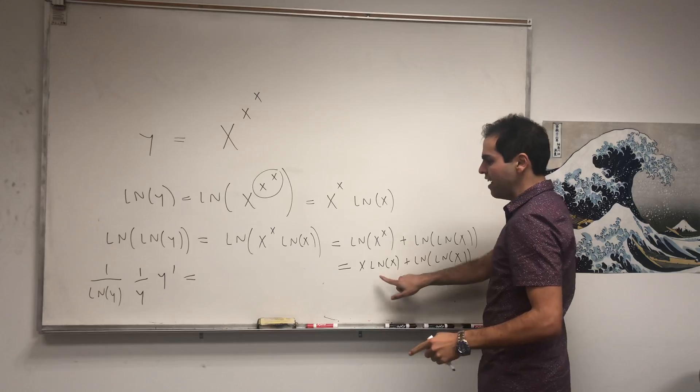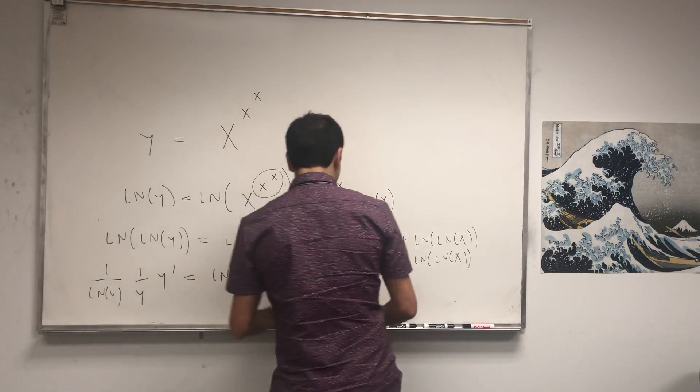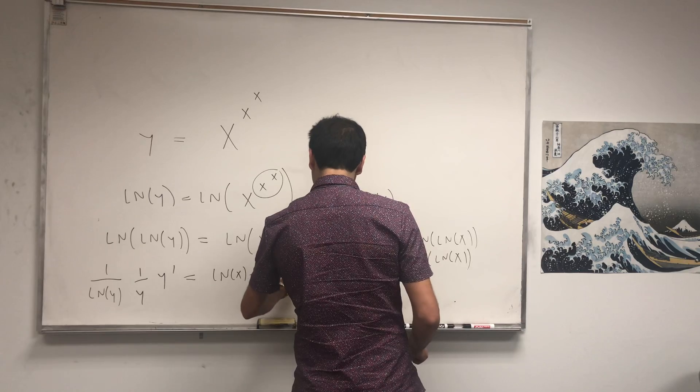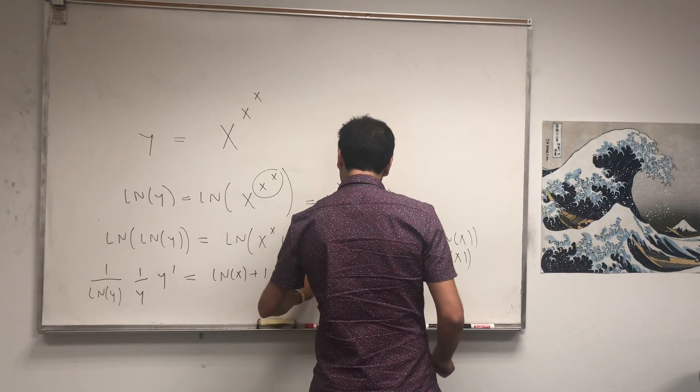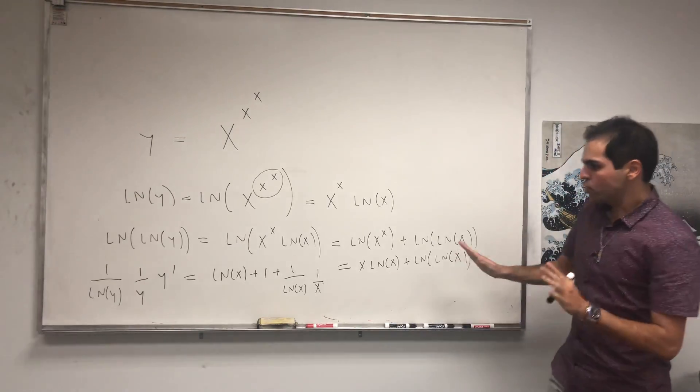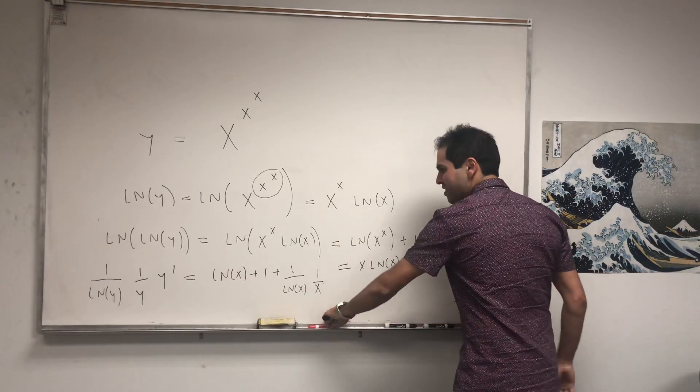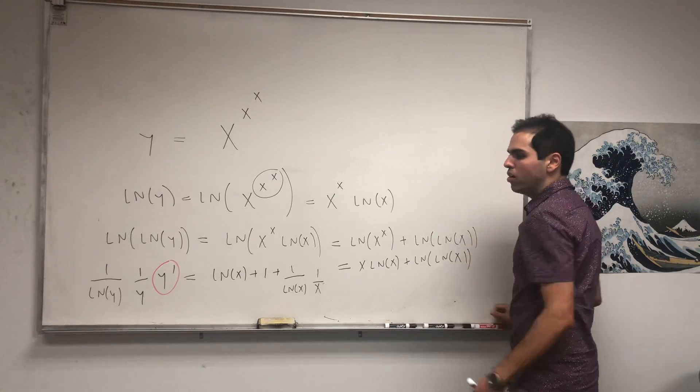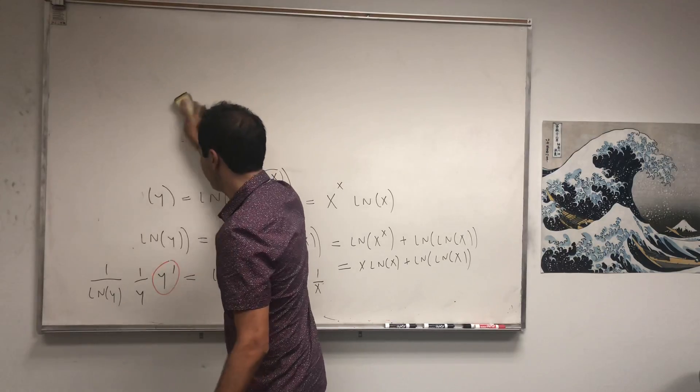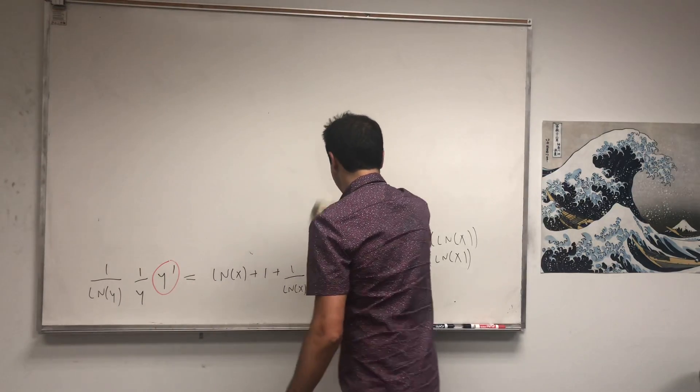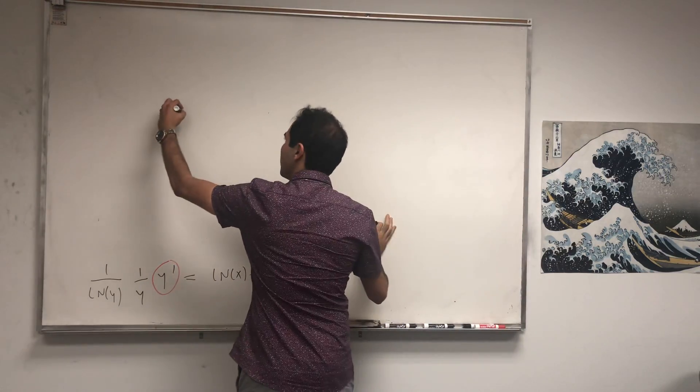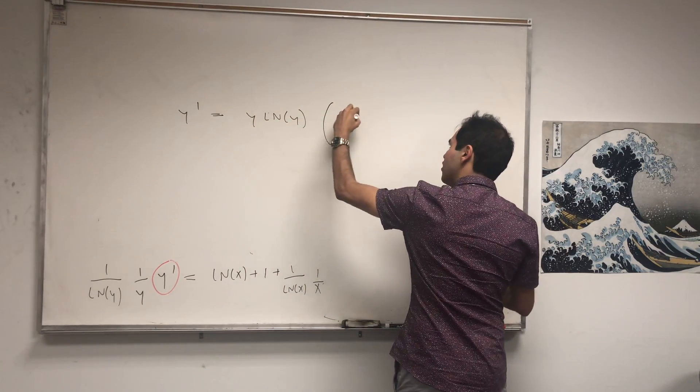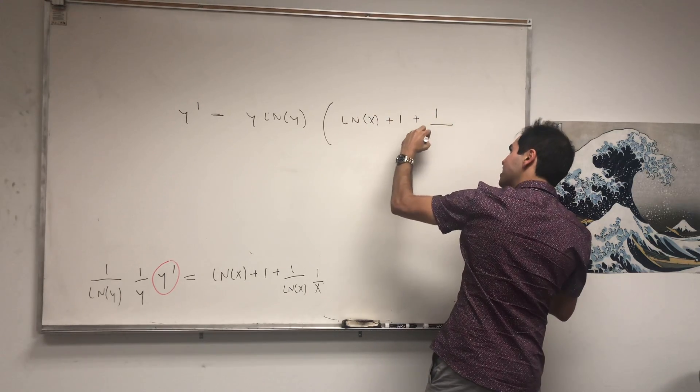which becomes ln of x plus x times 1 over x, which becomes 1, plus 1 over ln of x, times 1 over x. All right, so that's good. So we have this identity that involves derivatives. And now, remember what we want to solve for. We want to solve for y prime. So let's just multiply everything by ln of y times y. And then we end up getting y prime equals to y ln of y times all this chunk, ln of x plus 1, plus 1 over x ln of x.